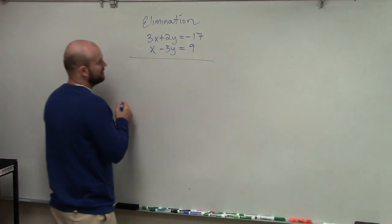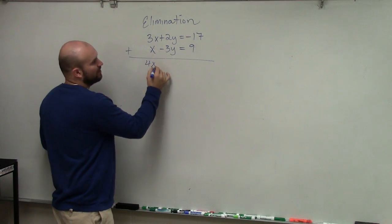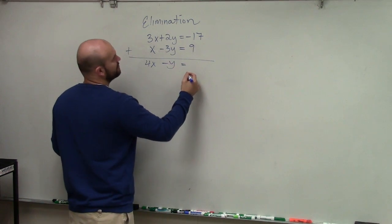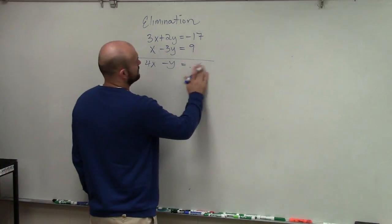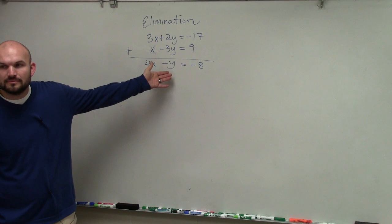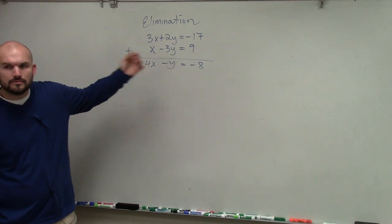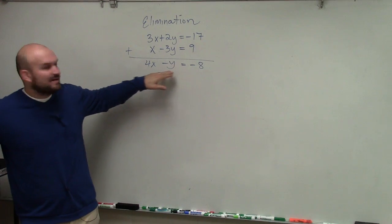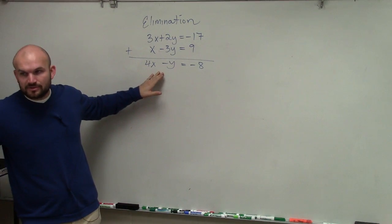Now, let's just kind of look at this hypothetically. First of all, if I add these equations, I would get 4x minus y equals negative 8. When you add them up, do any of your variables have a coefficient of 0? No. So therefore, neither of your variables are going to be eliminated.